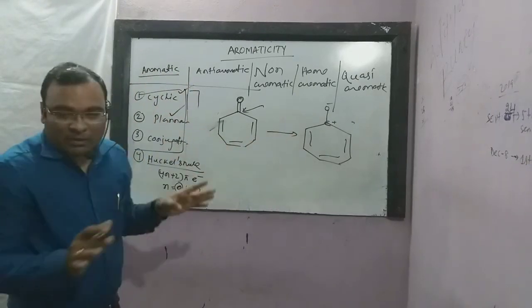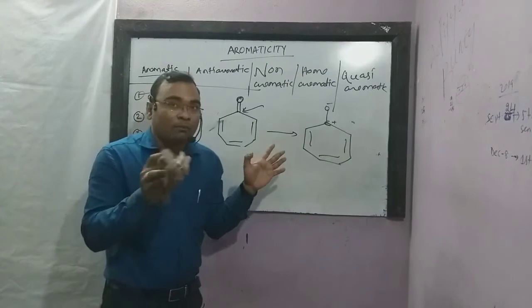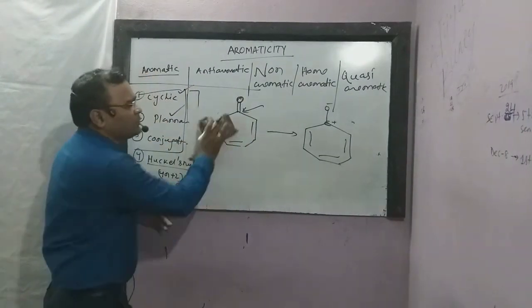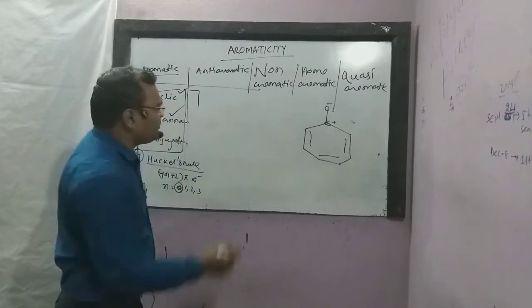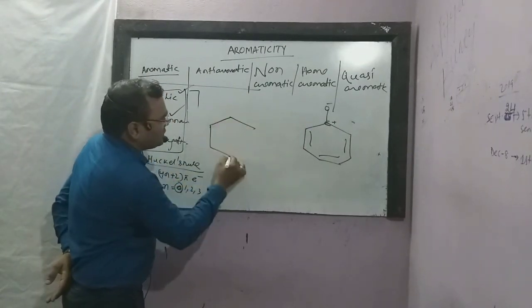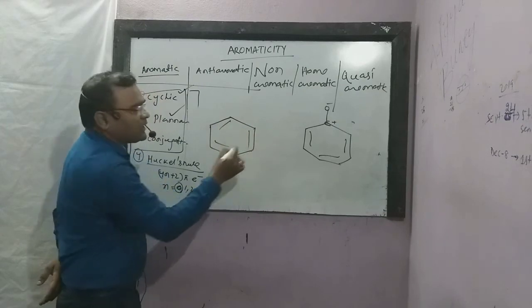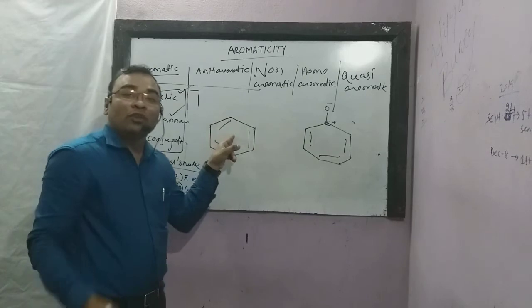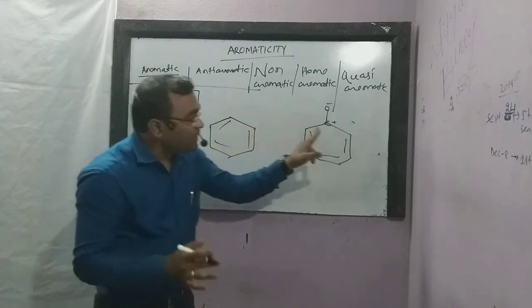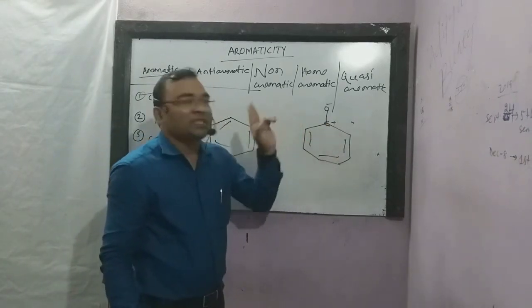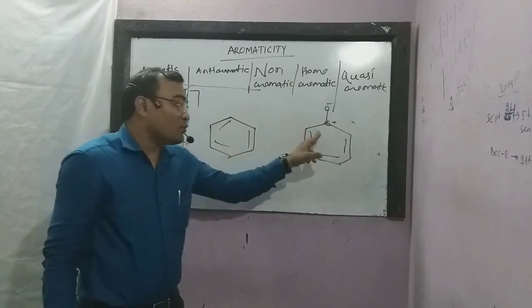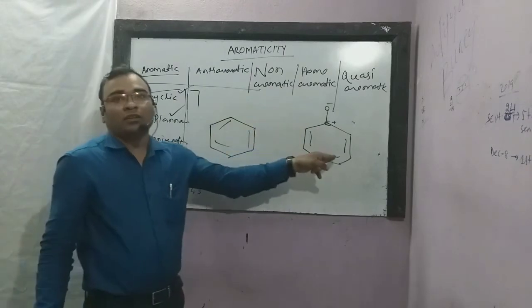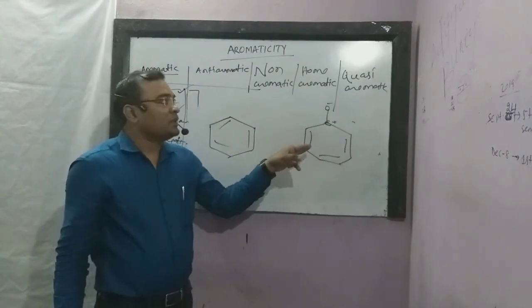With this compound, there are three pi bonds, six pi electrons. Since oxygen is electronegative and carbon is electropositive, we have carbon plus, oxygen minus. With three double bonds, we satisfy aromatic conditions. Since this positive charge is concerned with conjugation, this type of compound is called quasi-aromatic compounds. All quasi-aromatic compounds are aromatic, but all aromatic compounds are not quasi-aromatic. Benzene is aromatic but not quasi-aromatic because it has no charge.